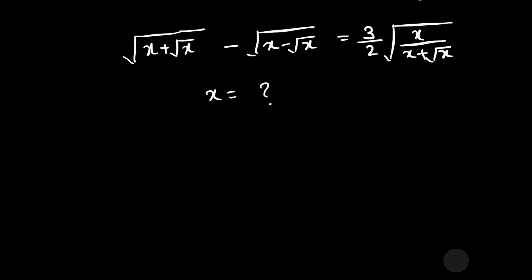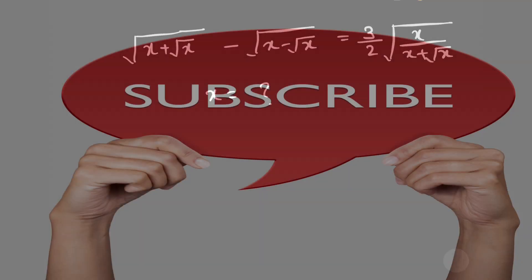Welcome to our YouTube channel Saval Bawal. Our question is: the square root of (x plus square root of x) minus the square root of (x minus square root of x) is equal to (3/2)x divided by the square root of (x plus square root of x). We have to solve for x.